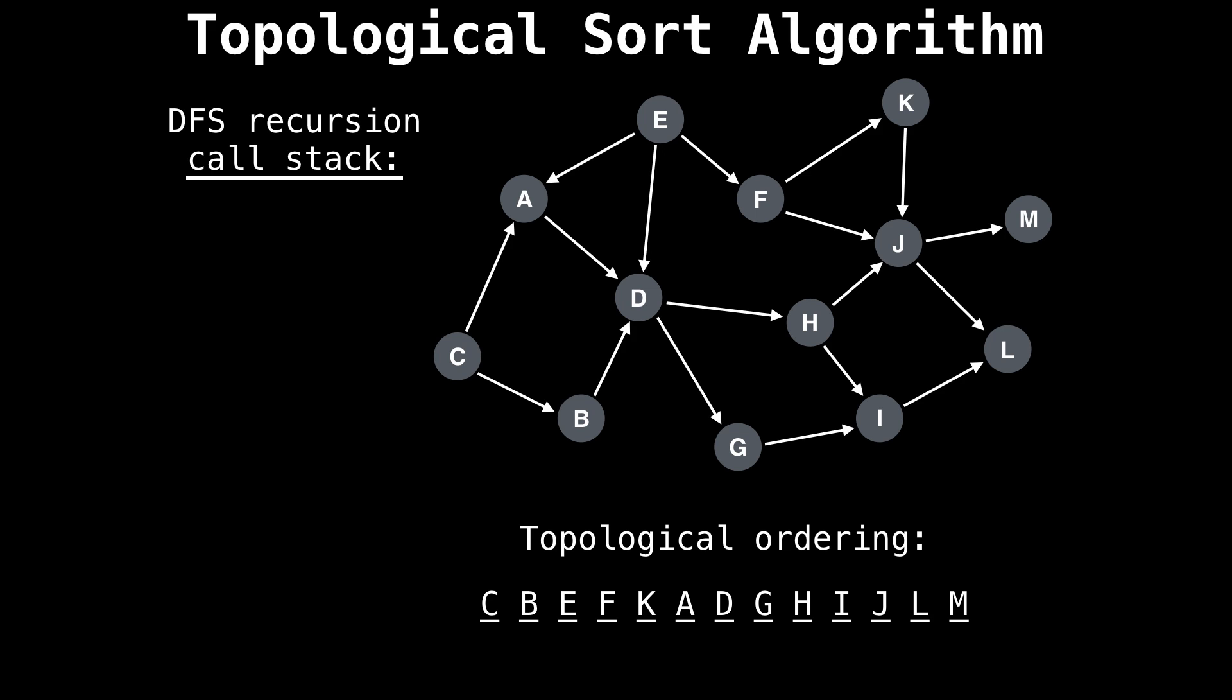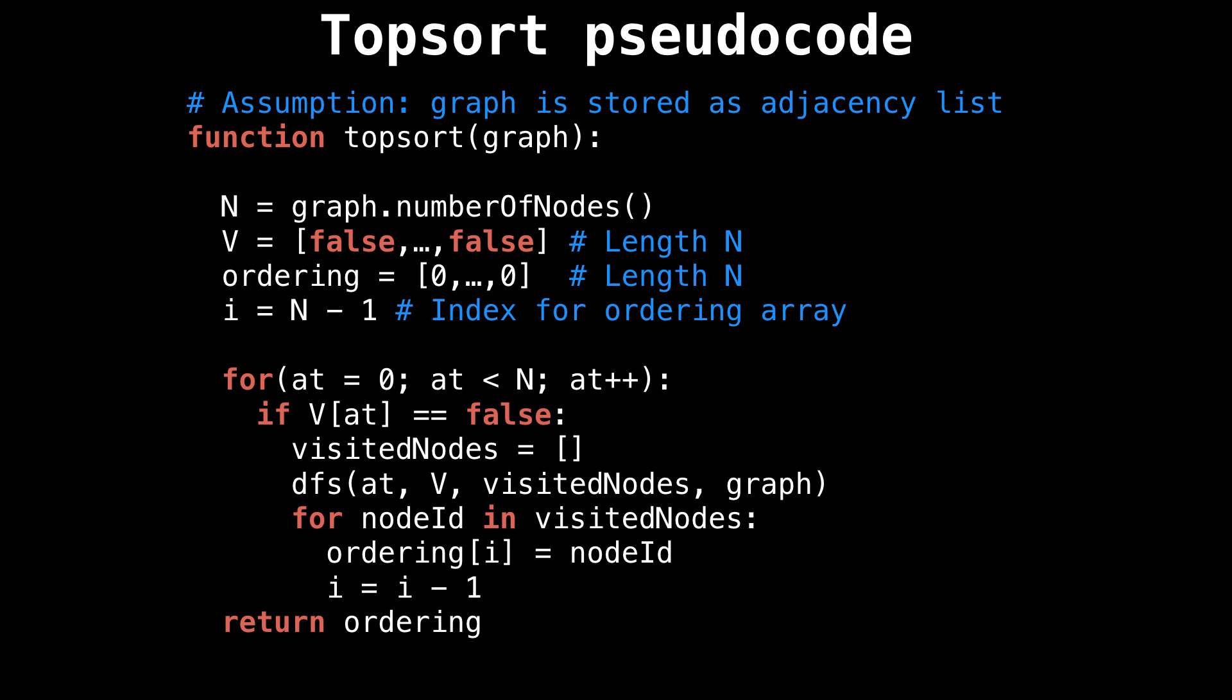So now that we understand how the algorithm works, what does the code actually look like? Here's some pseudocode for top sort. Let's walk through it real quick. The first thing I do is I get the number of nodes from the graph, which I assume is passed in as an adjacency list from the function. Then I declare an array called V short for visited, which tracks whether a node has been visited or not.